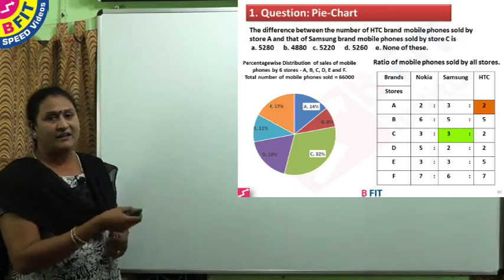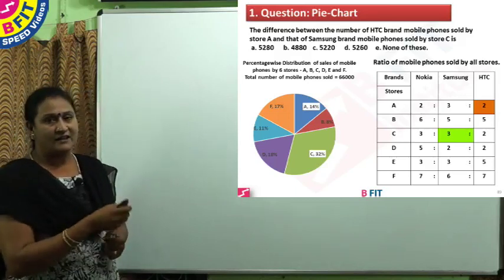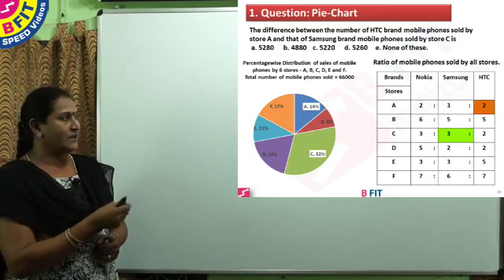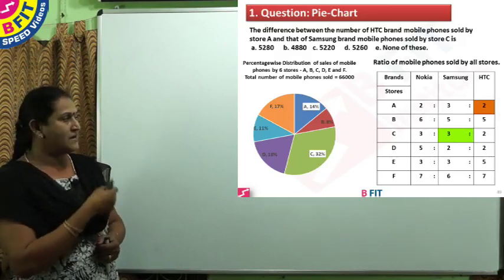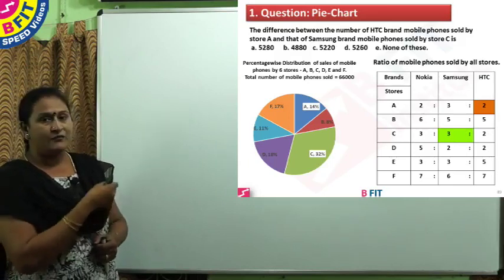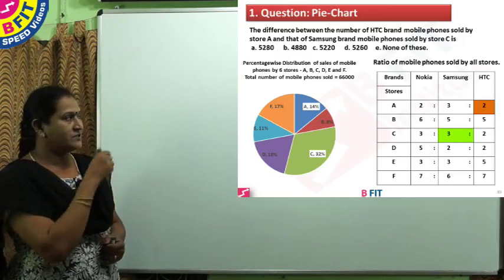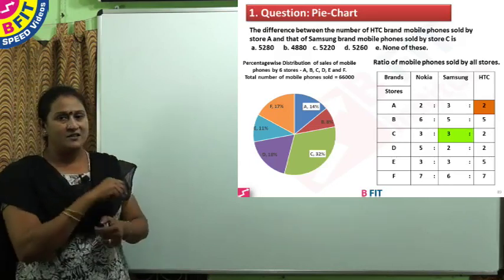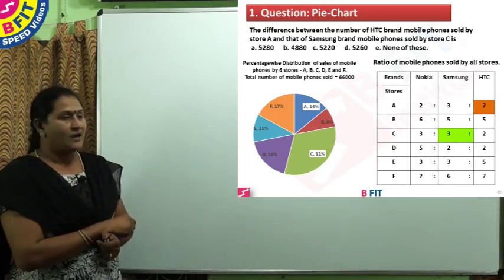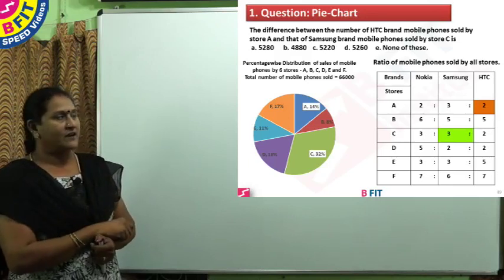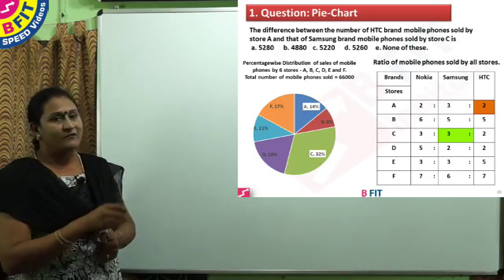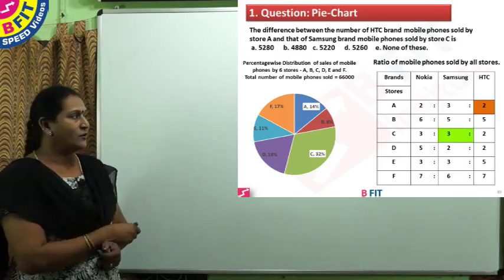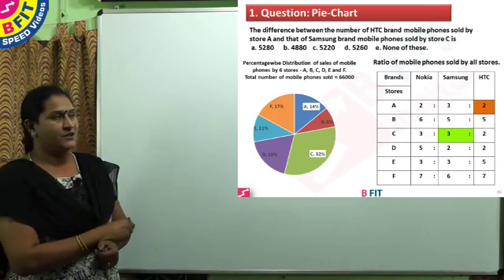Instead of finding each value separately and then taking the difference, since the total number of phones (66,000) is the same for both percentages — 14% for A and 32% for C — we can write everything in a single stretch and cancel out common factors to make the work easier.